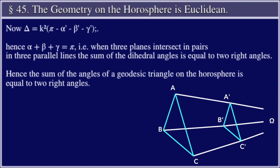Now Δ is equal to k² times the quantity (π - α' - β' - γ'). Hence α + β + γ is equal to π, i.e., when three planes intersect in pairs in three parallel lines, the sum of the dihedral angles is equal to two right angles.